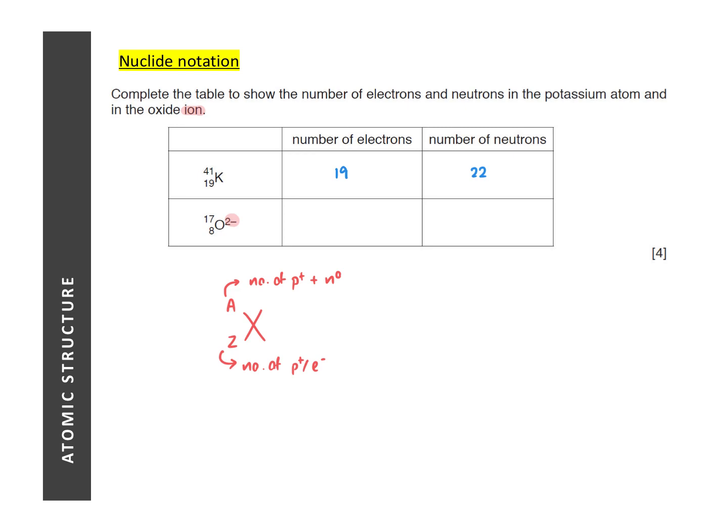For the oxide ion, this is slightly tricky. Number of neutrons, we can still take your nuclear number minus your atomic number. So that would give us 9. But the number of electrons, if you are not careful enough, you might put it as 8 because the atomic number or proton number is 8. But it's not 8 because it carries a charge of 2 minus, meaning it has taken in 2 additional electrons. So the number of electrons is actually 8 plus 2, which is 10.